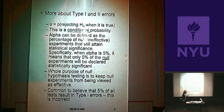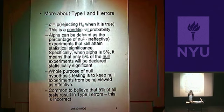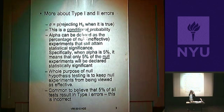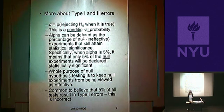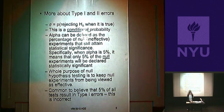I want to bring up a couple more points about Type 1 and Type 2 errors. Alpha is the probability of rejecting the null when it is true — that is called a conditional probability. Sometimes people find it easier to think of it as a percentage, not 0.05, but 5%. So 5% of what?